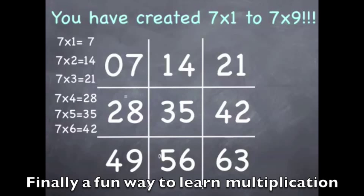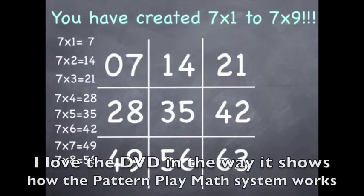Seven times seven in the bottom row is 49. Seven times eight is 56. And seven times nine is 63.